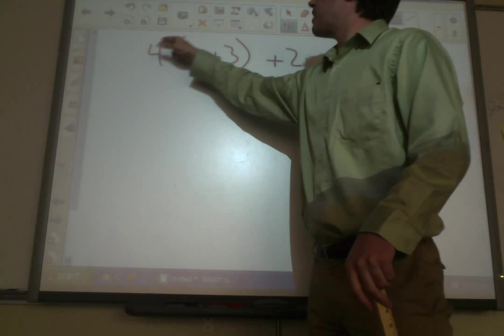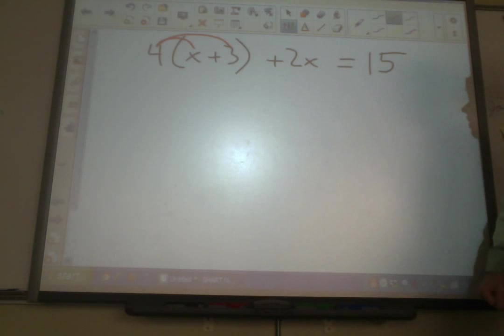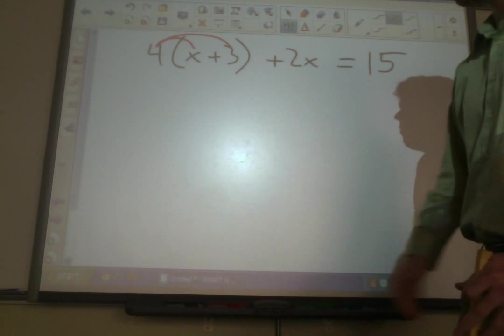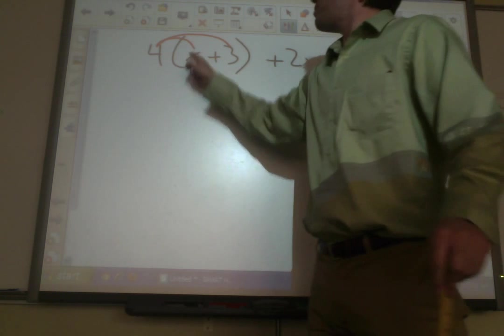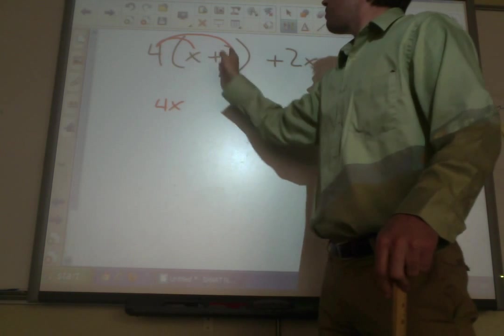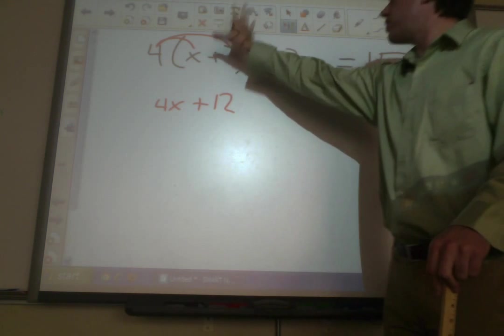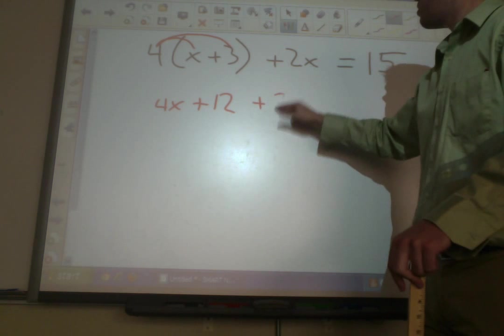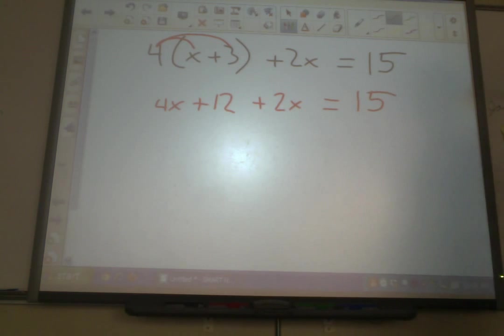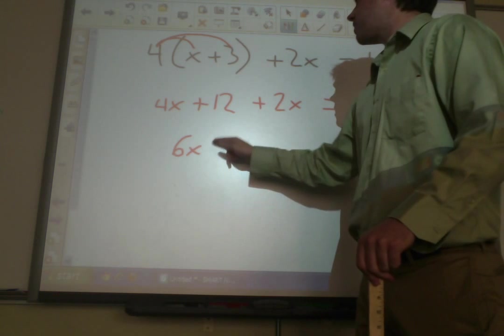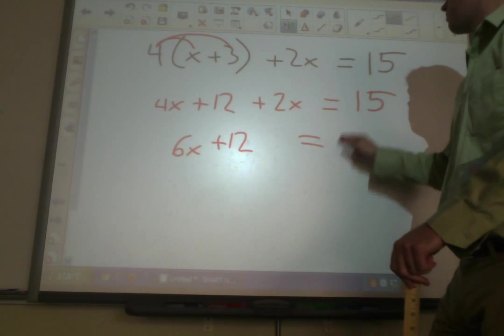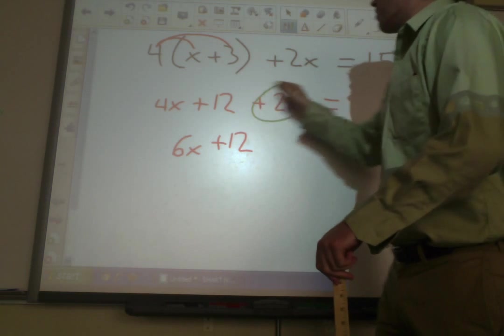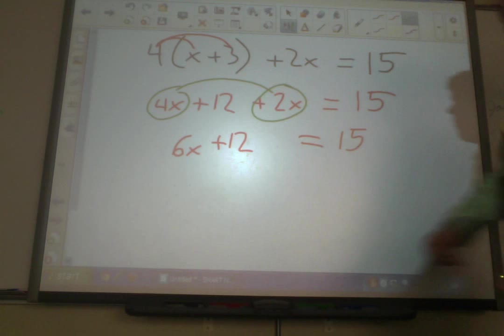The distributive property means I can take this 4 and distribute it to both things in the parentheses, and after I do that, we've just kind of broken that parentheses prison around it. The parentheses will go away. So, 4 times x is 4x. 4 times 3 is 12. Now, the parentheses are gone. Let's just bring down everything else we've got. We've got plus 2x equals 15. No more parentheses. They're shattered. Now, we can combine like terms. 4x plus 2x is going to be 6x. So, we've got 6x plus 12 equals 15. So, here's what I did. I combined this with this. Now, it looks like something that we can solve really easily.